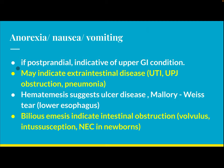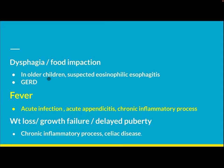Anorexia, nausea, and vomiting — if postprandial — are indicative of upper GI conditions, but may also indicate extra-intestinal disease like UTI, ureteropelvic junction obstruction, or pneumonia. Hematemesis suggests ulcer disease or Mallory-Weiss tear of the lower esophagus. Bilious emesis indicates intestinal obstruction, volvulus, intussusception, or necrotizing enterocolitis in a newborn.